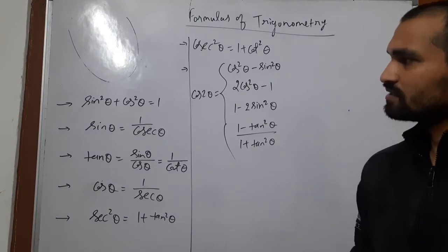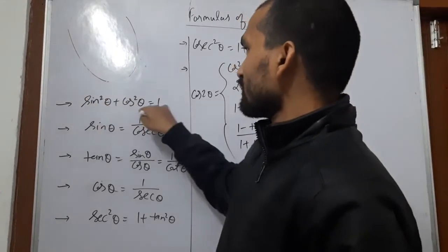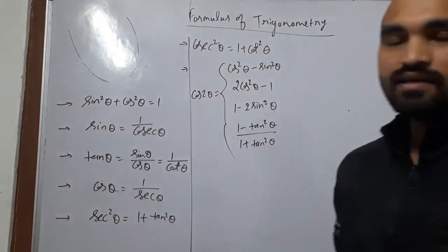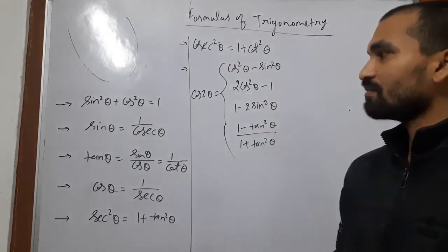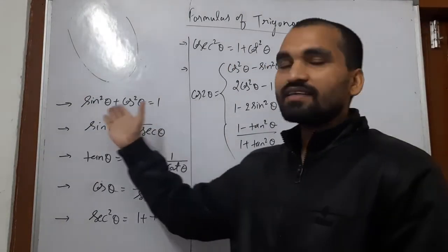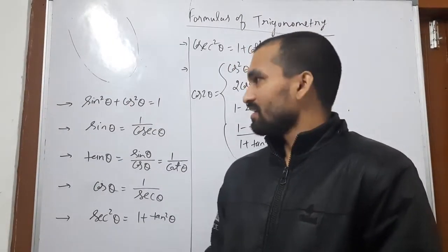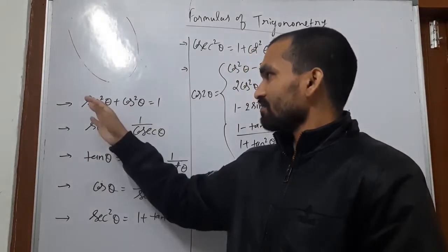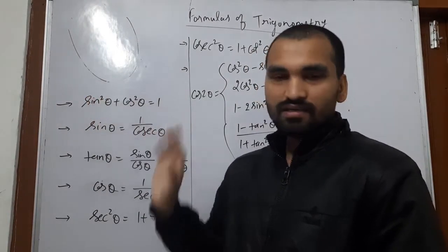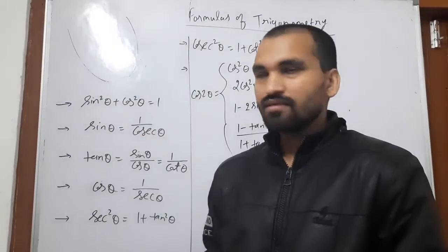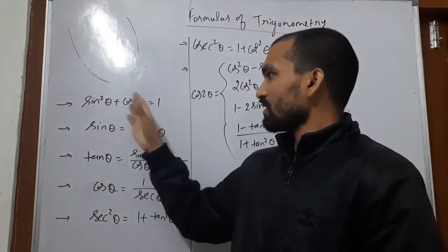The first one is sin square theta plus cos square theta is equal to 1. It is a very famous identity of trigonometry. We know that this is a very useful property.